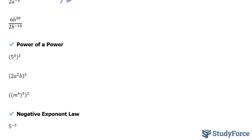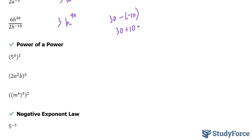Lastly, we have 6 over 2, which is 3. Then h to the power of 30 over h to the power of negative 10 gives us h to the power of 40, because 30 minus negative 10 is like saying 30 plus 10, which is 40.